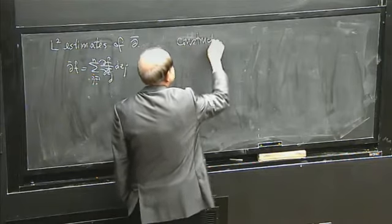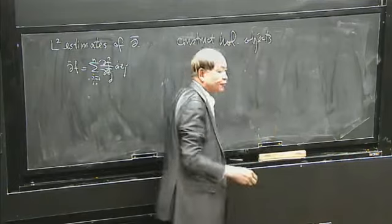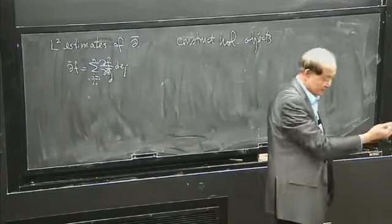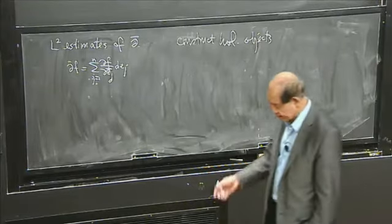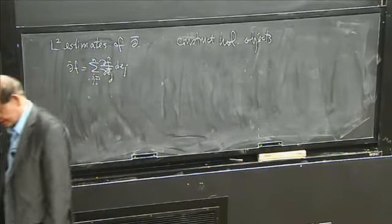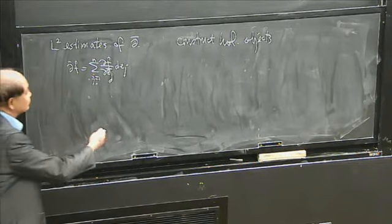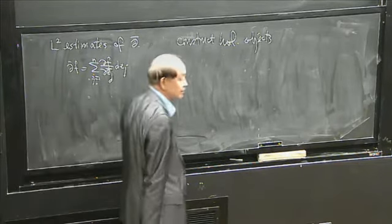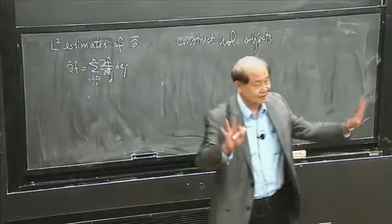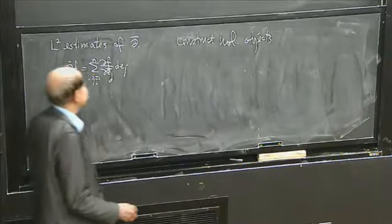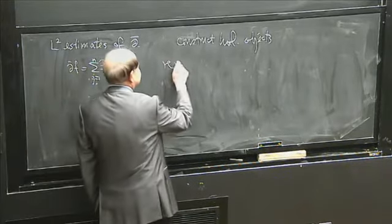Whether you want to say that two manifolds are the same — you construct a map between them — or you embed things in a projective space to make it algebraic, you construct a holomorphic section of a certain line bundle. If you say that it's Stein or embeddable properly into Euclidean space, then you construct holomorphic functions. Anything, you construct holomorphic.